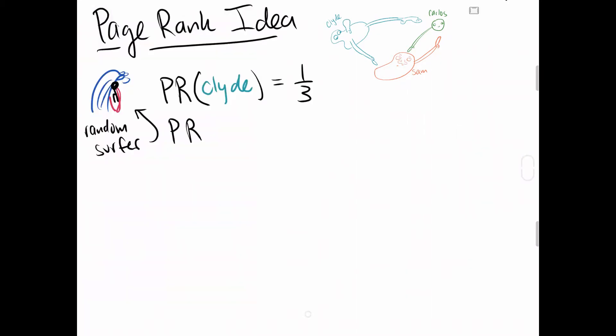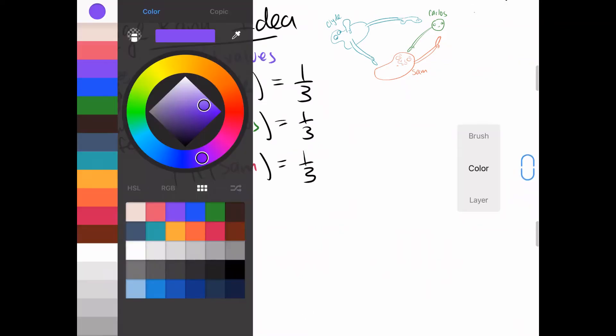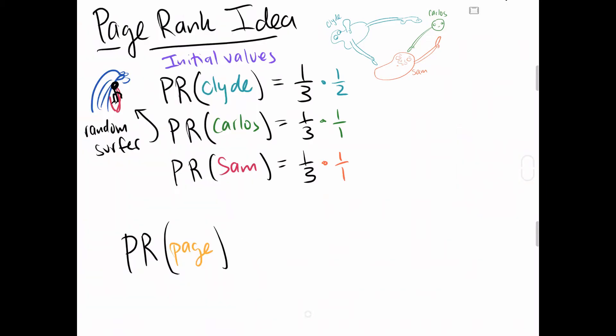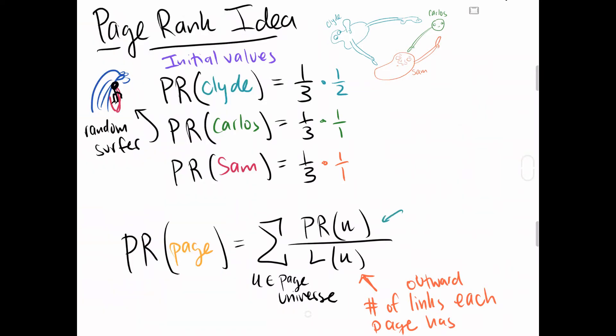To do this, we assume the initial probability that a random surfer arrives at one of our blob friends to be one over the total number of blobs in our system, in this case, one over three. Those other fractions on the right correspond to the number of points that each blob participates in. In general, this idea combined with the idea of summing the number of points to each blob results in our PageRank formula, that the PageRank of some web page is the sum of all the PageRanks of the linking pages divided by the number of links that comes from each page.